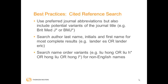To summarize some best practices when searching for cited references: Use the list of preferred abbreviations when looking for a particular publication, but be aware that other variations may be found — use alternate abbreviations as well. Search author last name, initials, and first name for the most complete results. For non-English names, particularly Asian names, consider name order variants. Names are typically captured in the order presented, and that order may vary by journal.